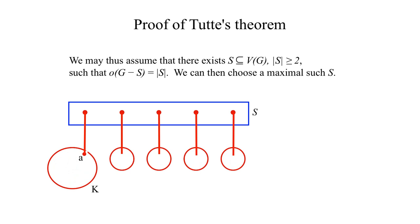Suppose that K minus A contains a set T of vertices such that the number of odd components of K minus A minus T is greater than the cardinality of T. The number of odd components of K minus A minus T is at least the cardinality of T plus 2.